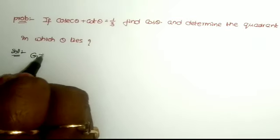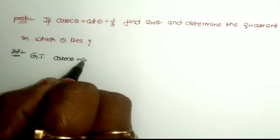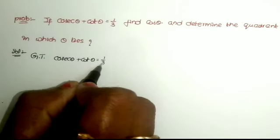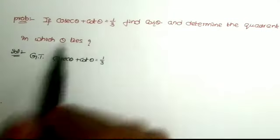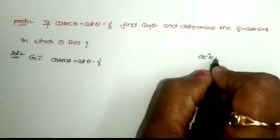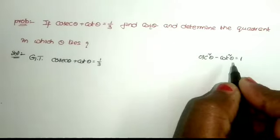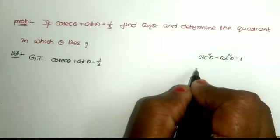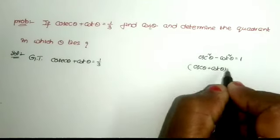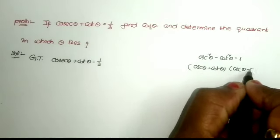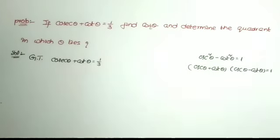Here one equation is given: cosecant theta plus cot theta is equal to 1 by 3. We already know one identity — cosecant squared theta minus cot squared theta equals 1. This is in the form of a squared minus b squared, and a squared minus b squared equals a plus b into a minus b. So this value equals cosecant theta plus cot theta into cosecant theta minus cot theta.